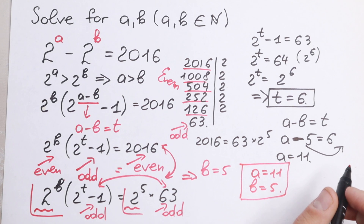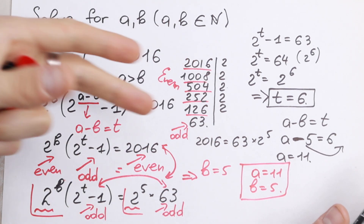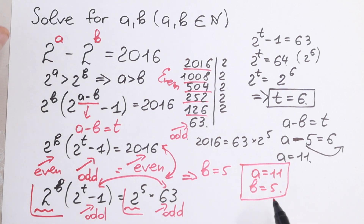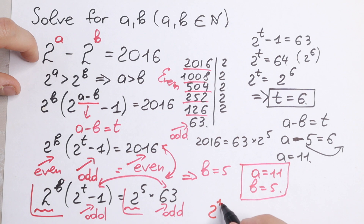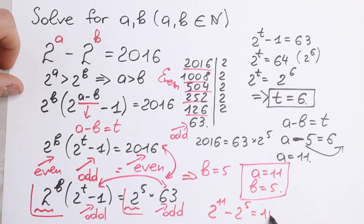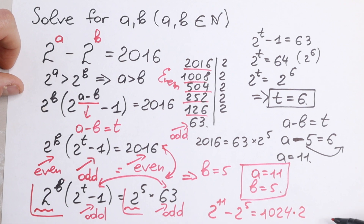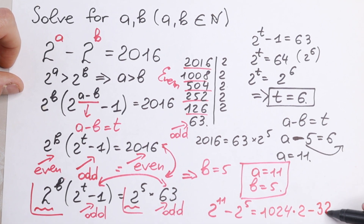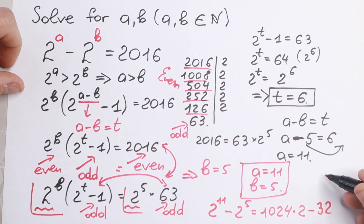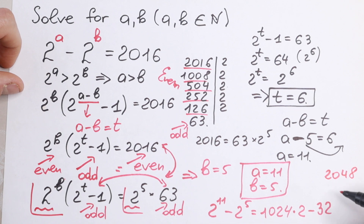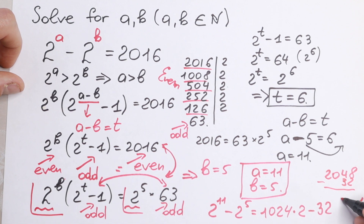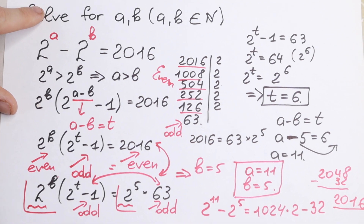Let's verify this quickly. 2 to the power 11 minus 2 to the power 5: we know 2 to the 10th equals 1024, so 2 to the 11th equals 2048. And 2 to the 5th equals 32. So 2048 minus 32 equals 2016, which is correct!